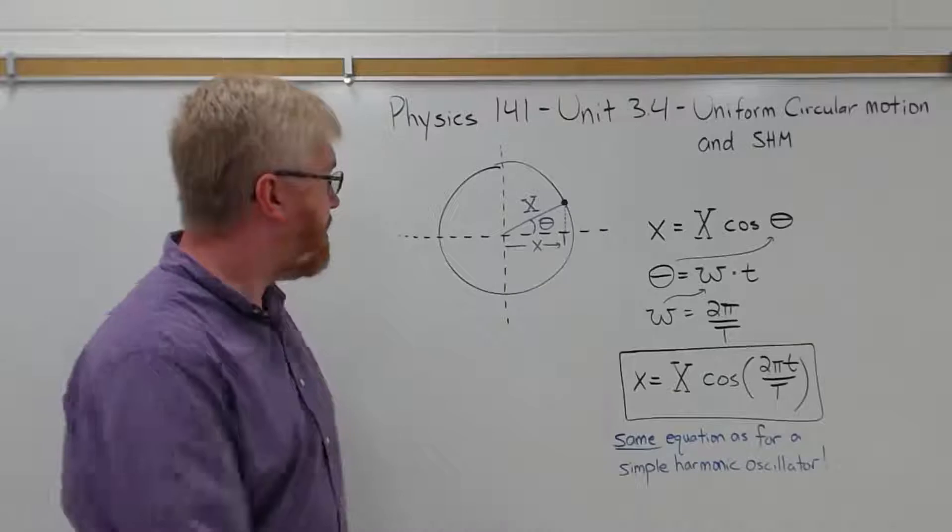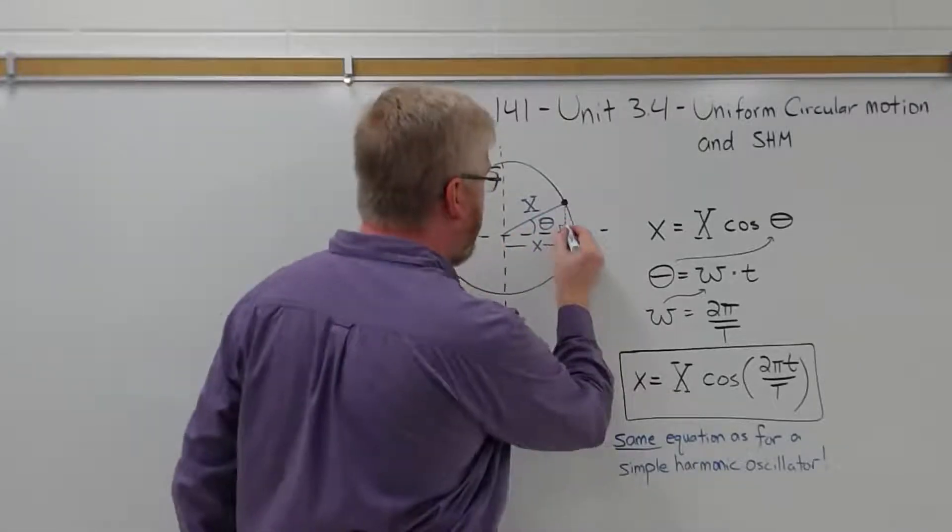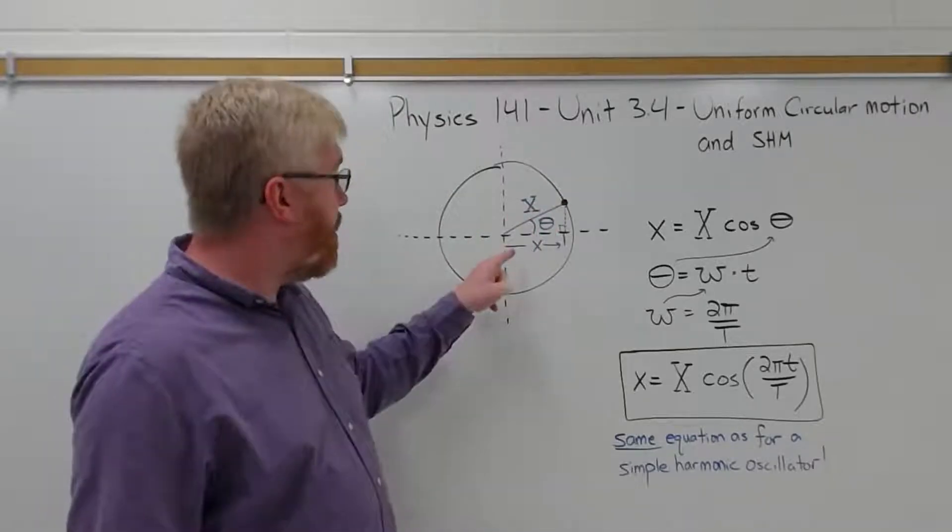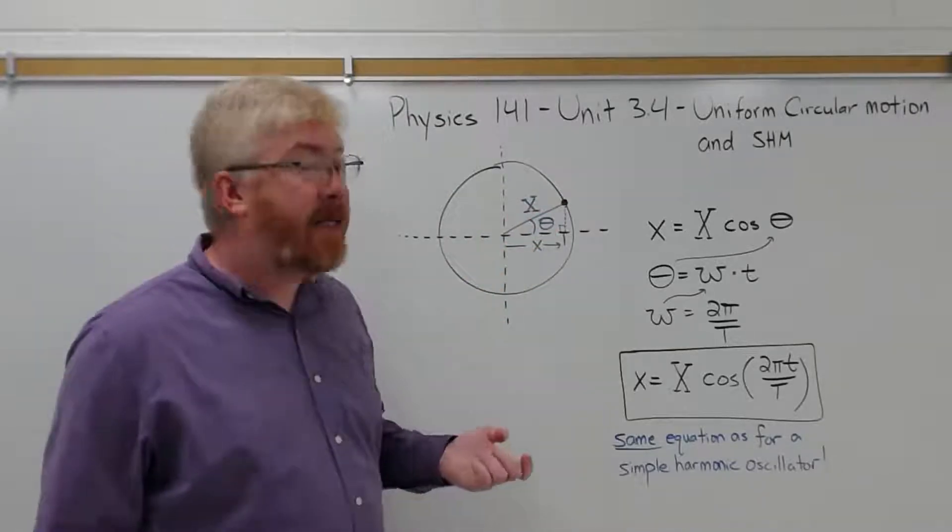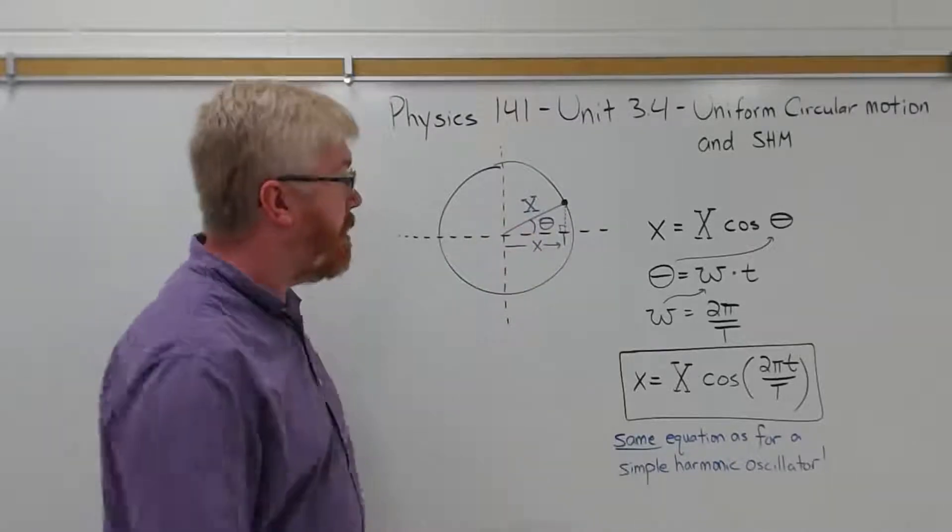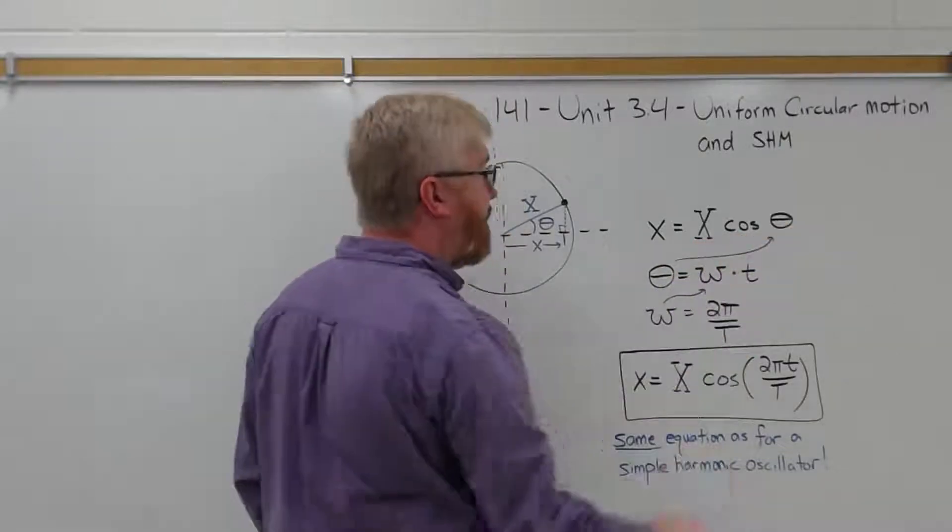Well, that's simple trigonometry. This is a right triangle. Capital X is the hypotenuse of that triangle. Small x is the adjacent side. So the relationship between the adjacent side and hypotenuse is cosine. So the adjacent side is equal to the hypotenuse times the cosine of the angle.